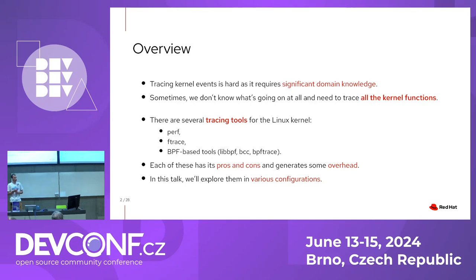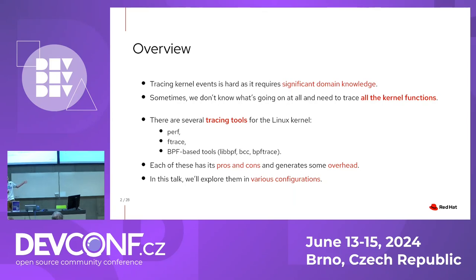There are a number of tools for tracing the Linux kernel. I've been experimenting with three of them: perf, ftrace, and a couple of tools based on BPF technology. I know there are plenty more tools, however I think these three — taking the BPF-based tools as a group — are the most widely used ones. Each of these tools has its advantages, and they almost always generate some overhead, which I'll also discuss.